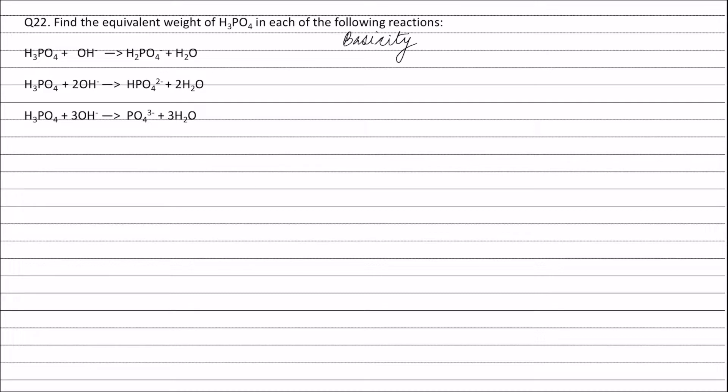In the first reaction, phosphoric acid or H3PO4 furnishes only one mole of H+ ions, which combine with one mole of OH- ions to form one mole of H2O. Therefore, the basicity of H3PO4 in the first reaction is one.